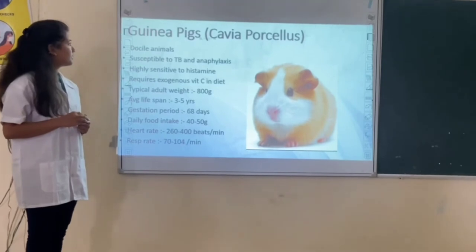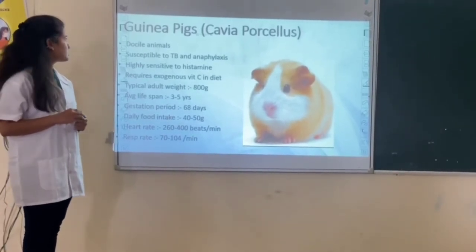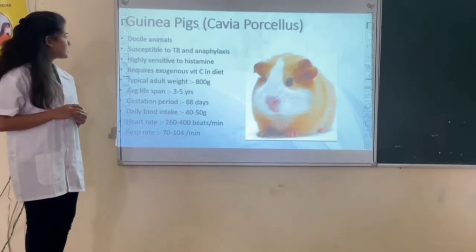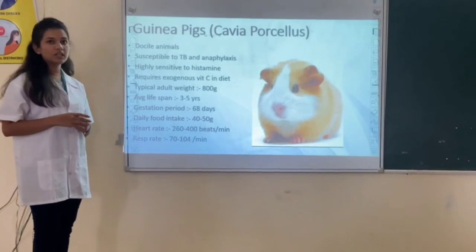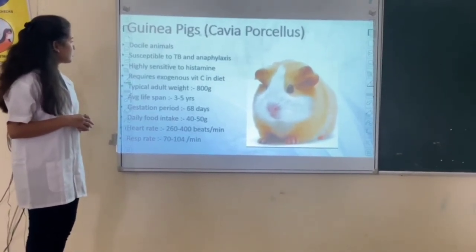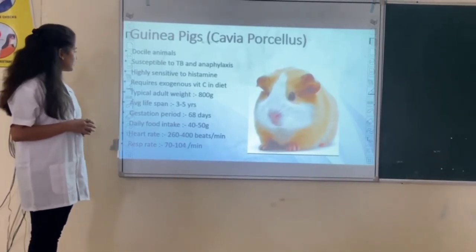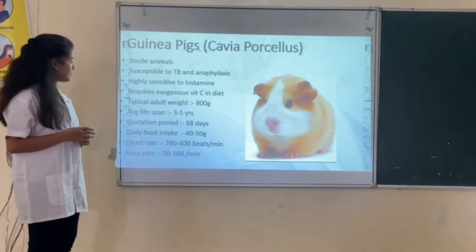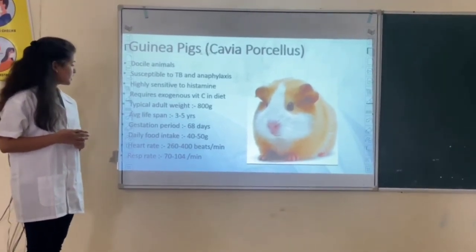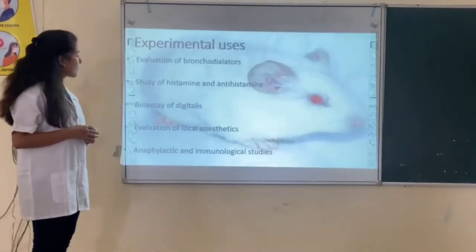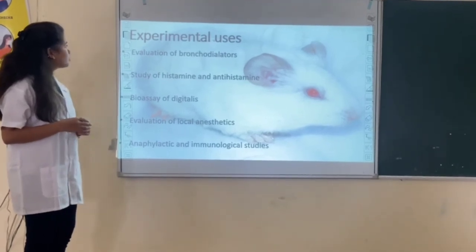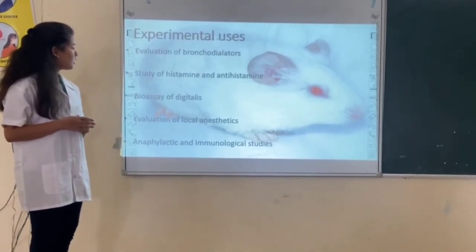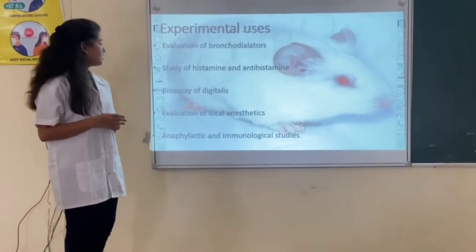The next laboratory animal is guinea pig. Its scientific name is Cavia porcellus. It is a docile animal. It is susceptible to tuberculosis and anaphylaxis, and is highly sensitive to allergens. Typical adult weight is 800 grams. Average lifespan is 3 to 5 years. Gestation period is 68 days. Daily food intake is 40 to 50 grams. Heart rate is 260 to 400 beats per minute. Respiration rate is 70 to 104 per minute. Experimental uses: evaluation of bronchodilators, study of histamine and anti-histamines, bioassay of digitalis, evaluation of local anesthetics, and anaphylactic and allergic studies.